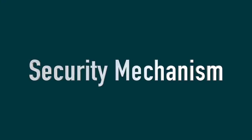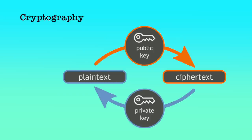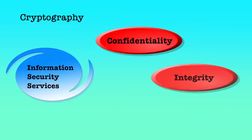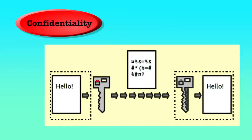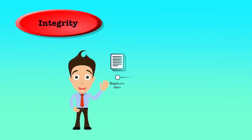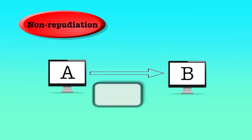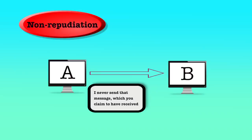Now we will discuss security mechanisms. To provide secure communication, cryptography is extensively used. Cryptography facilitates providing three information security services: confidentiality, integrity and non-repudiation. Confidentiality is ensured because only those who have the encryption key can decode the information. Since authorized users only can send encrypted information, a user cannot deny that they sent the information, and hence non-repudiation is also ensured.